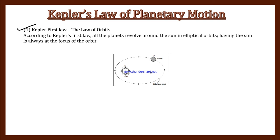Number one is Kepler's First Law, or the Law of Orbits. According to Kepler's First Law, all the planets revolve around the sun in an elliptical orbit. The planets like Jupiter, Mars, and other planets that we've studied revolve around the sun.